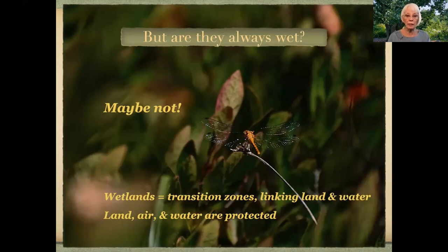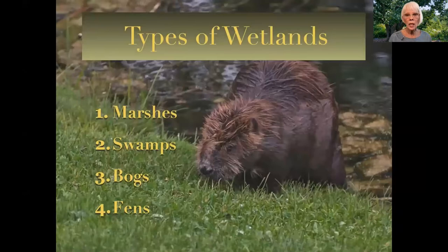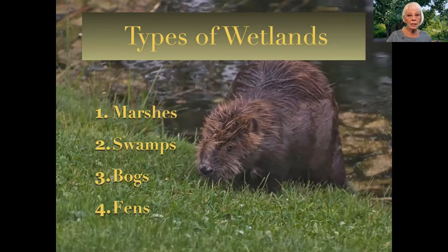Please don't forget — wetlands are transition zones. They form the link of land and water, and by their action, the land, the air, and the water are all protected. This big beaver is here to tell us that wetlands are divided into categories: we have marshes, swamps, fens, and bogs.